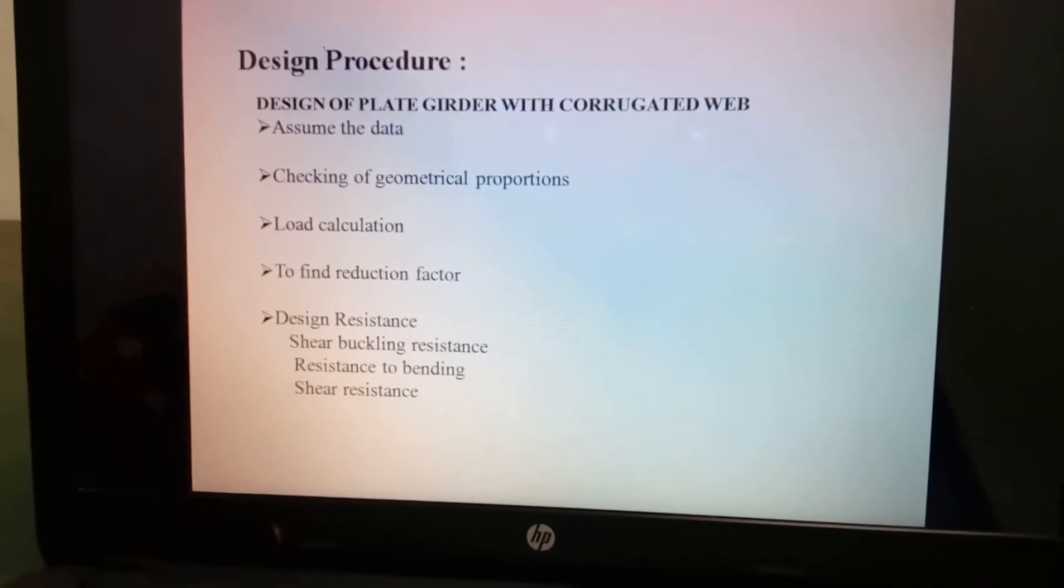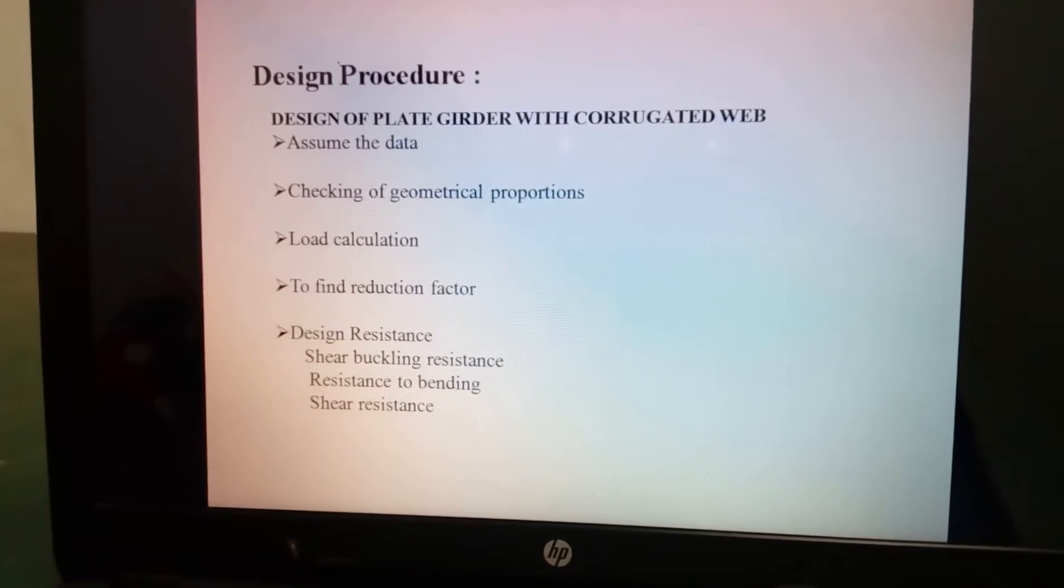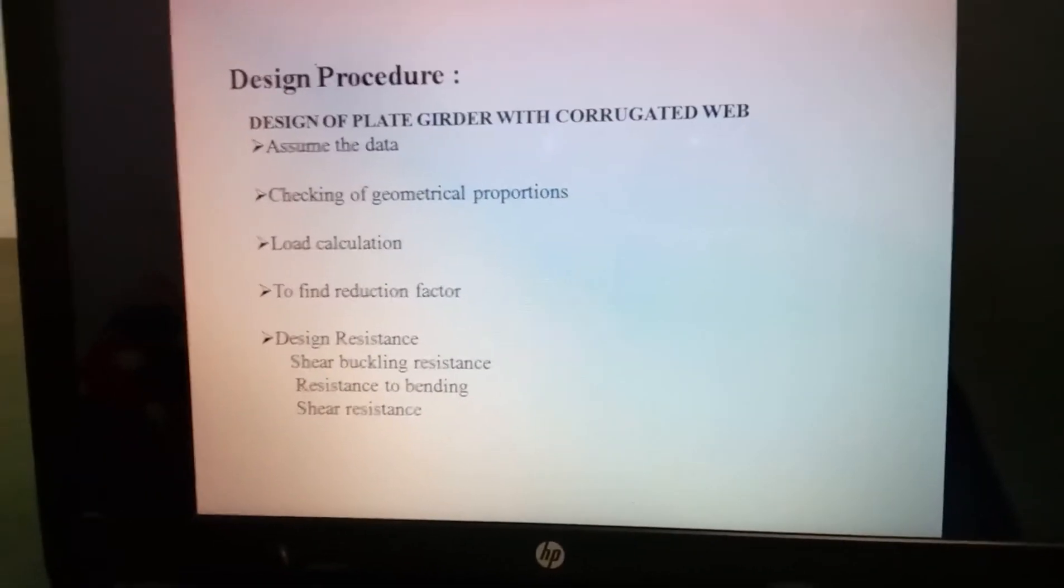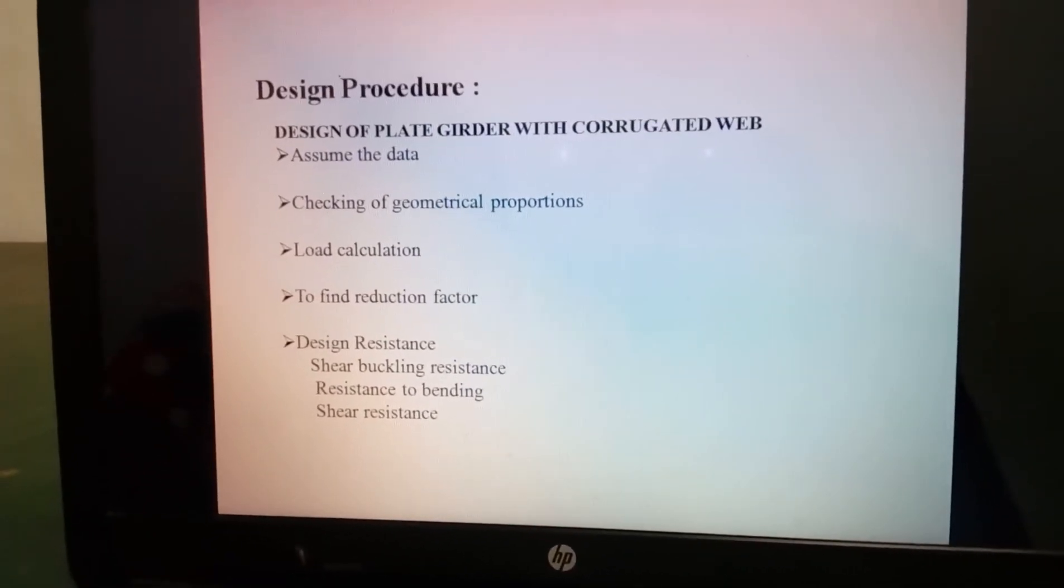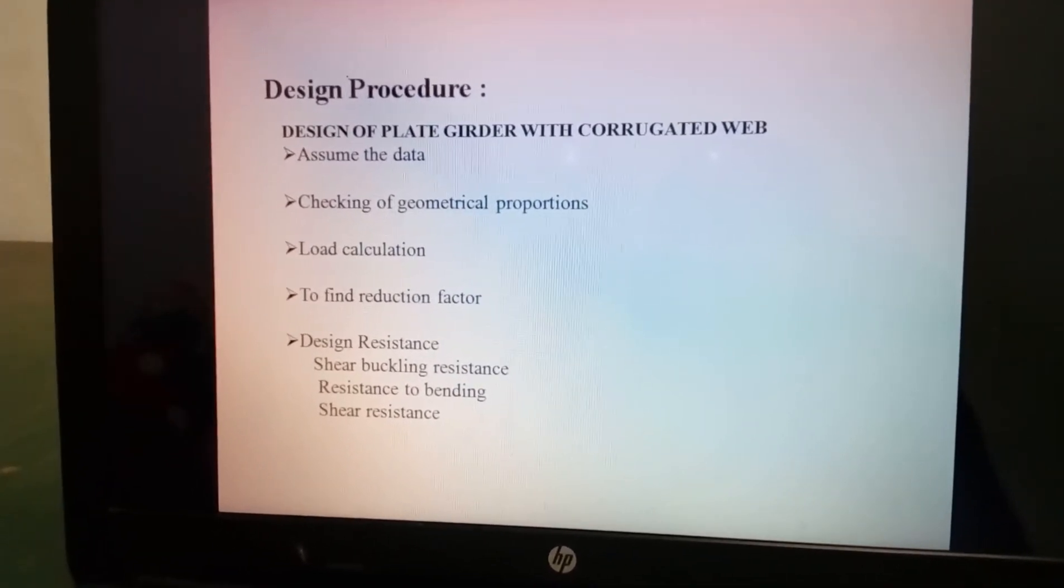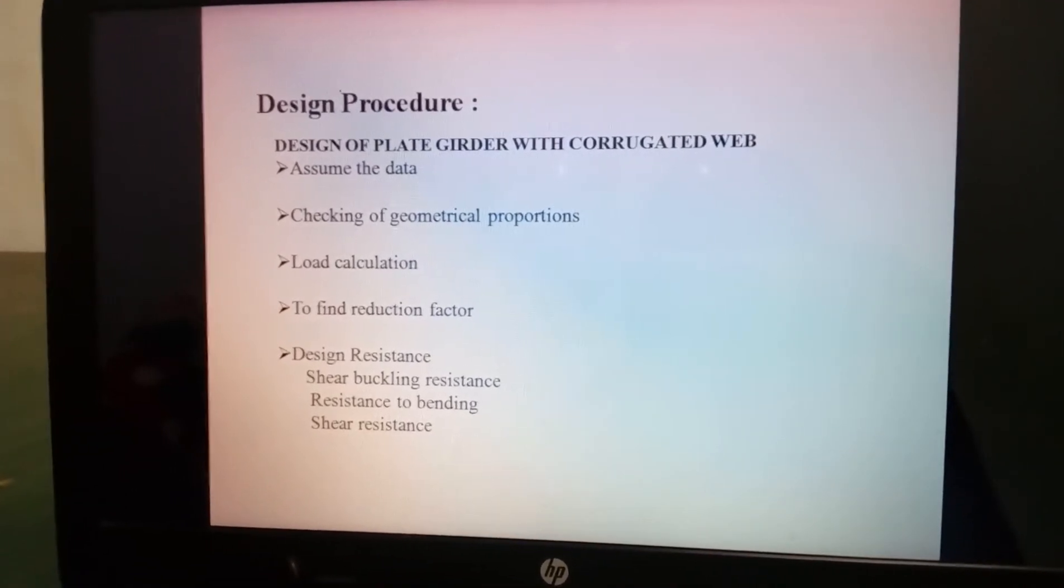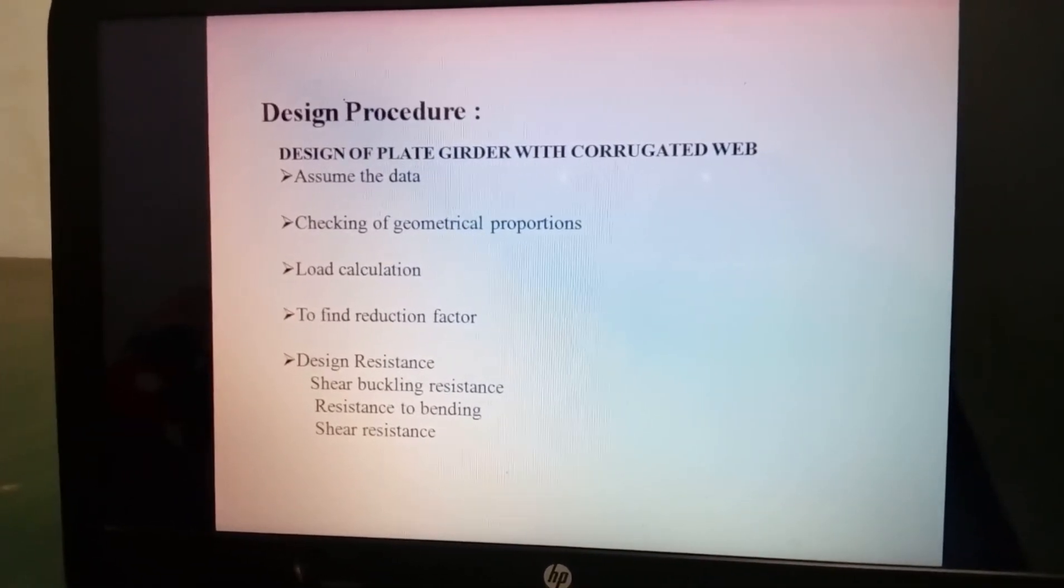Design procedure for plate girders with corrugated web: assume the data, checking of geometrical proportions, load calculation, to find reduction factor and design resistance. Three design resistances: shear buckling resistance, resistance to bending, and shear resistance.